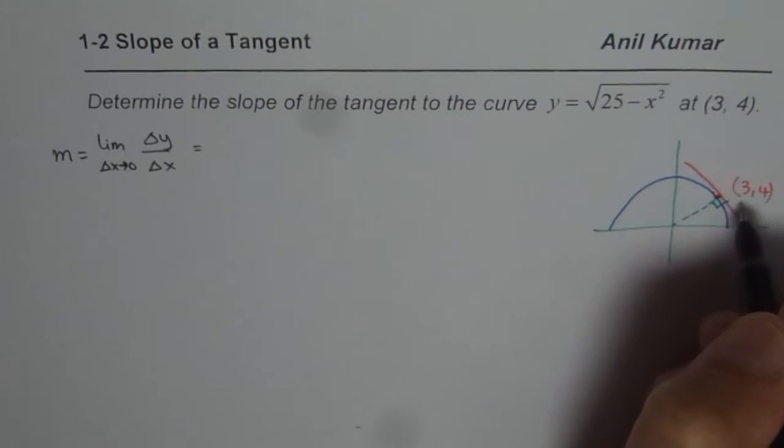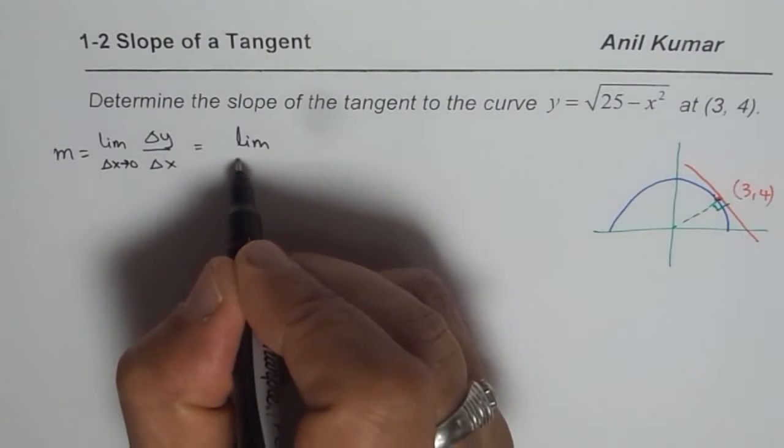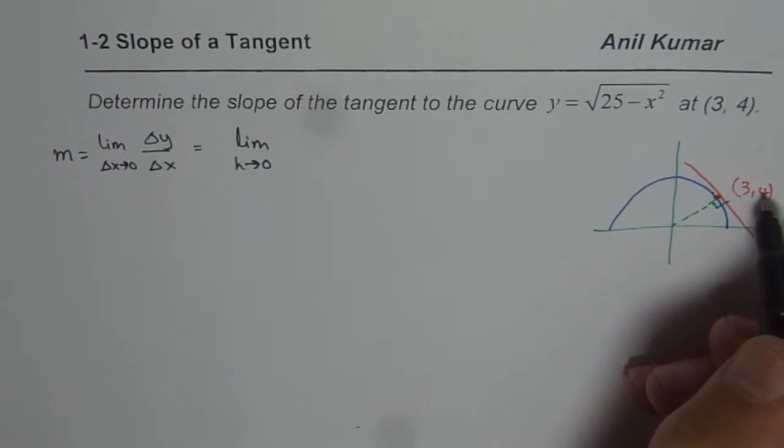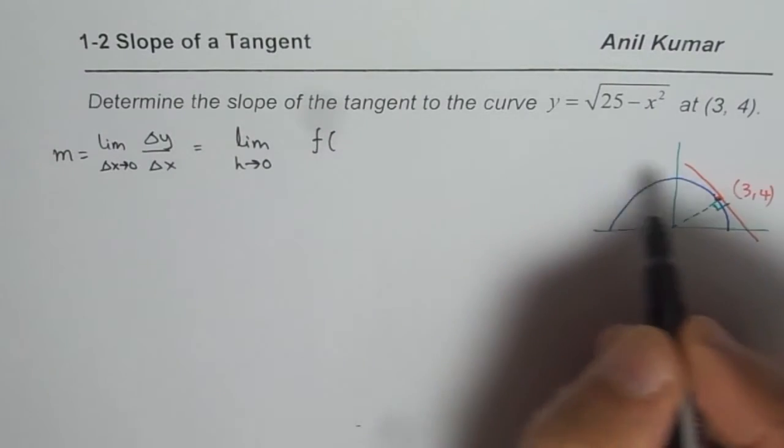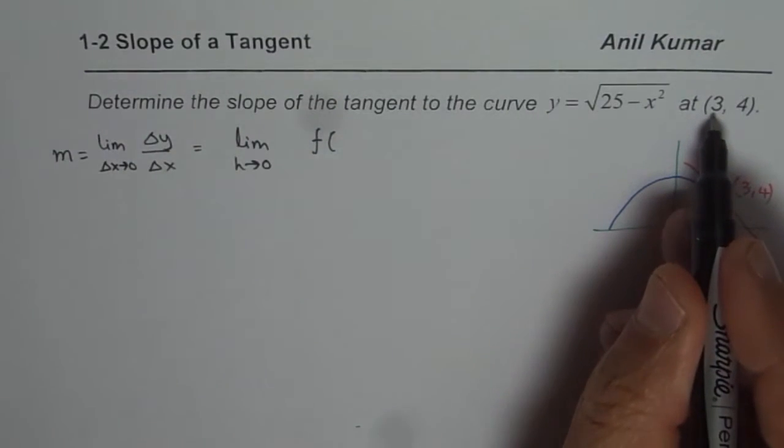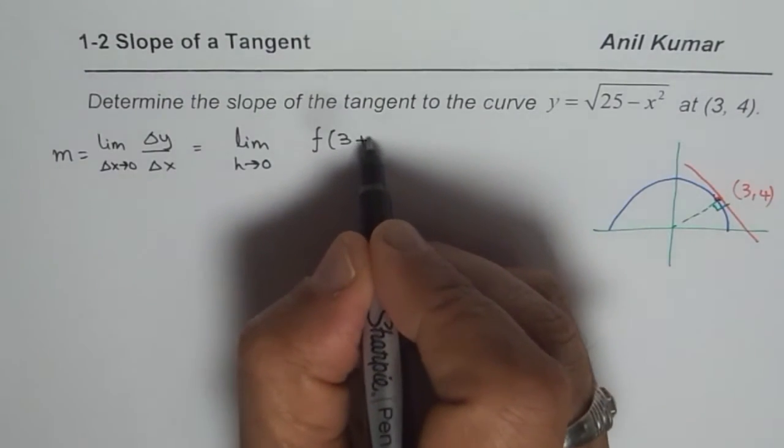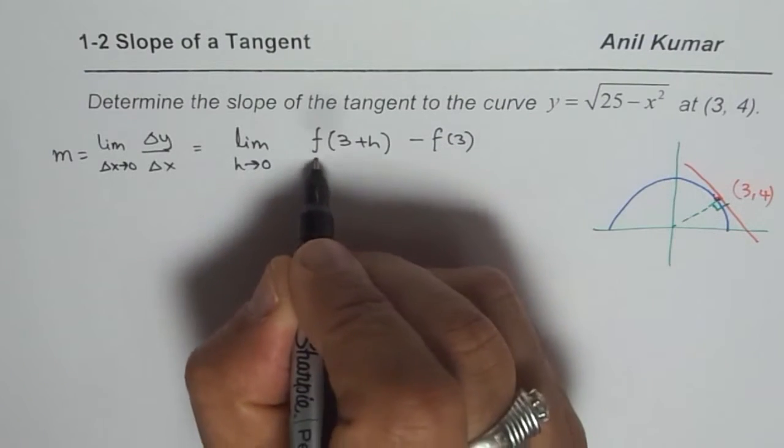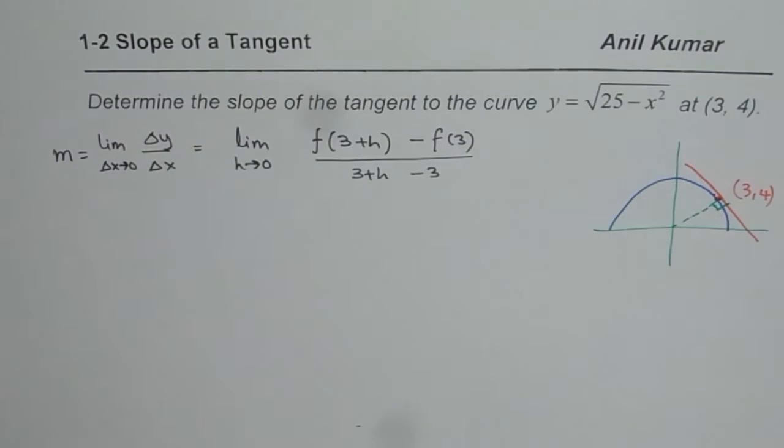So we will consider a point which is very close to the given point, let's say just h units away. So we can write this as limit where h approaches 0 since the other point is at 3 plus h. And then the slope will be given as f of 3 plus h minus f of 3 divided by 3 plus h minus 3. So that is the equation to find the slope.